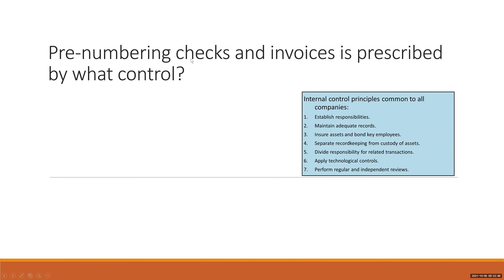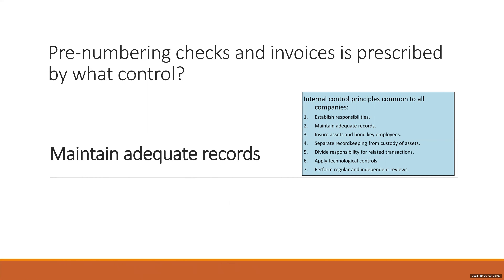Next: pre-numbering checks and invoices is prescribed by what control? The answer is maintain adequate records. You can really control your checks and invoices when you pre-number them. If checks one, two, three, five, six come in on your bank statement, you know check four is missing because they're numbered. It's the same with invoices — you can control and account for all of them.